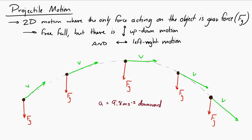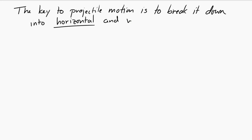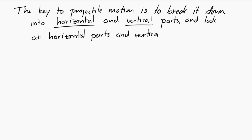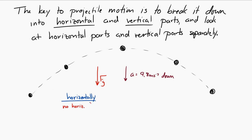When analyzing projectile motion, the key is to break it down into horizontal and vertical parts and look at each individually. Horizontally, there is no horizontal force at all — the only force acting is gravitational force and it's downward. Vertically, the force acting is the gravitational force downward, so there is a downward gravitational force at every point in the motion.